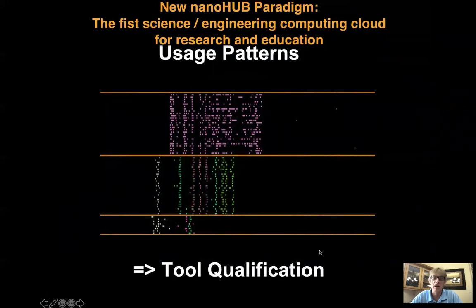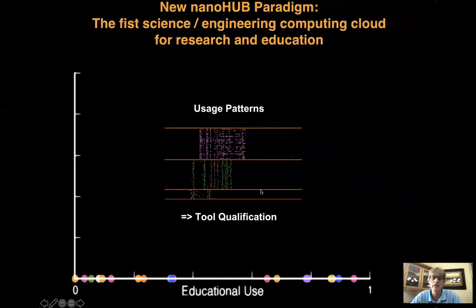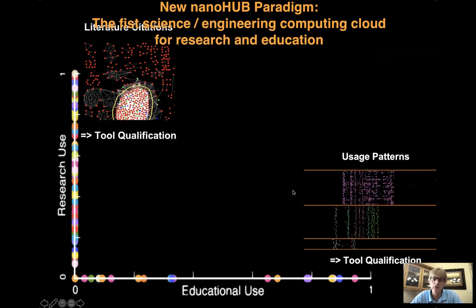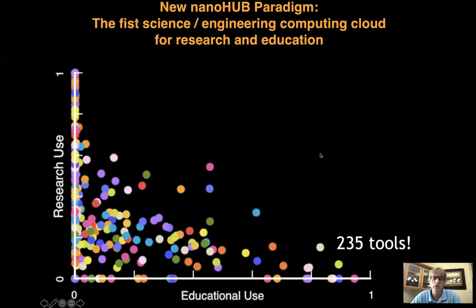If I can measure classroom attendance and classroom use of these tools, then these tools turn into classroom tools — they're no longer just research tools. I can develop a metric from very weak use in class to strong use in class. I also showed you the social network charts of papers where I can measure research impact. People think these two dimensions are orthogonal — that you either do research or you do education. But with the analytics we have, we can show that a significant number of tools are actually being used for both research and education.